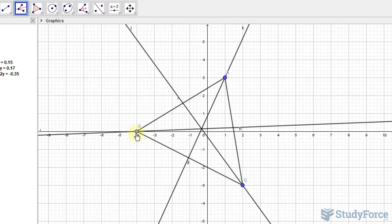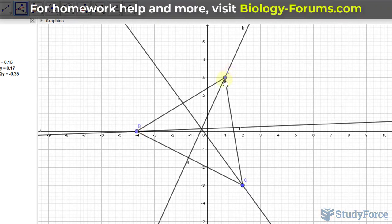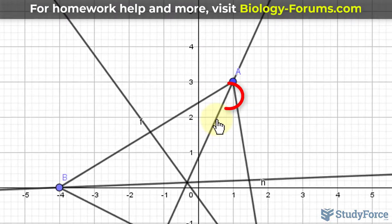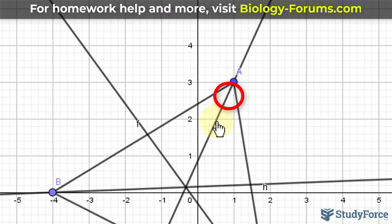Notice what this does. It creates lines that pass through the vertex and ensures the angle is divided into two equal parts.